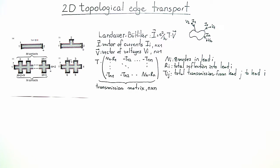In this problem we are going to consider several different device geometries of a 2D topological system and apply the multi-terminal Landauer-Büttiker formalism to find out what happens when an electric current is passed through the device.